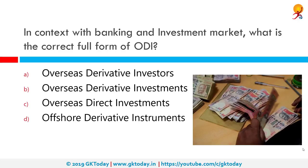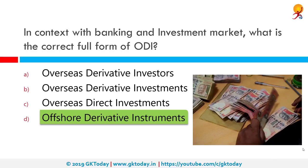In the context of banking and investment markets, what is the correct full form of ODI? The correct full form is Offshore Derivative Instruments, also known as participatory notes or P-notes. They are instruments used by foreign investors to invest in Indian securities markets without registering with SEBI. Securities include shares, bonds, and derivatives.